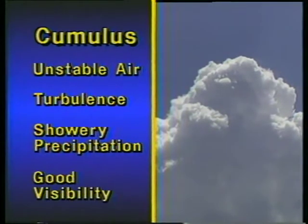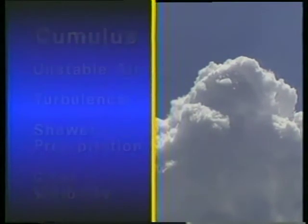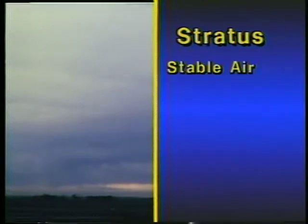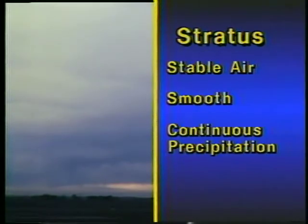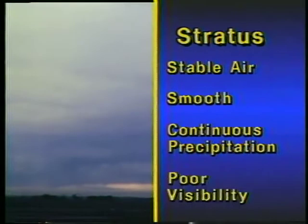Visibility outside the precipitation is usually good. In air masses with a high amount of stability, stratus clouds may form. Resisting vertical movement, these clouds form in smooth layers and often extend over large distances. Since the air is stable, flight near stratus clouds is normally smooth. Precipitation from these clouds can be continuous and last for several hours or even days at a time. The visibility associated with stratus clouds is usually poor.